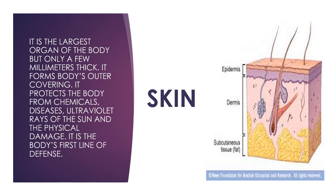The skin is the largest organ because it covers all parts of our body. It weighs more than twice the brain. The skin of an average adult human has a surface area of about 1.5 to 2 square meters and a thickness of 2 millimeters. It forms the body's outer covering and protects the body from chemicals, diseases, ultraviolet rays of the sun, and physical damage. It is the body's first line of defense.